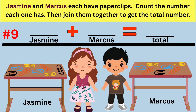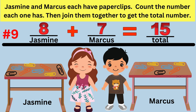Word problem number nine: Jasmine and Marcus each have paperclips. Count the number each one has, then join them together to get the total number. The answer is Jasmine has eight paperclips and Marcus has seven paperclips. The total is 15 paperclips. The number sentence is 8 plus 7 equals 15.